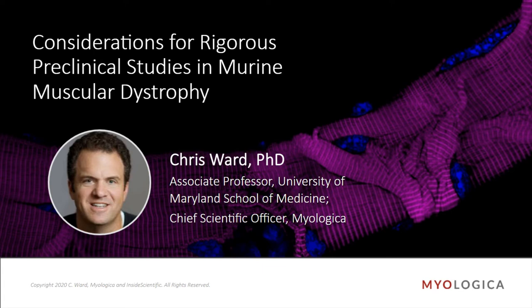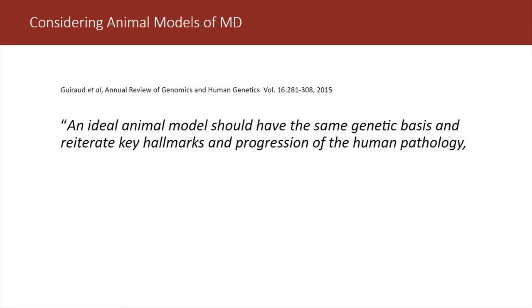Thank you, Liam. And thank you, Aurora, for sponsoring this event along with the Muscular Dystrophy Association. You'll hear from Sharon Hester-Lee toward the end of the presentation. I'm going to cover today some considerations of animal models of muscular dystrophy. In a comprehensive review written in 2015, Gerard et al. had a nice definition of ideal animal models: an ideal animal model of muscular dystrophy should have the same genetic basis.